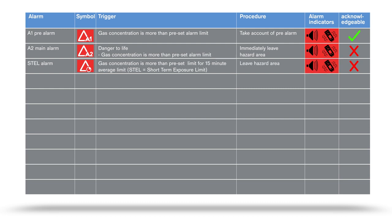A TWA alarm — time-weighted average — sounds when an average value, calculated from an eight-hour shift, is exceeded. You must leave the hazard area.